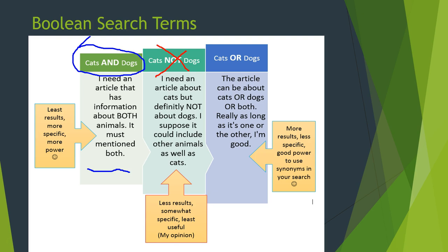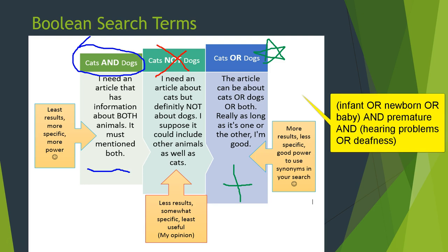The next Boolean term is OR, which means more results. With AND we get more specific but fewer results; with OR we get more results. This is great for including synonyms or giving the database more wiggle room. Cats OR dogs — one or the other, both of them, as long as it's some sort of pet. Or going back to the infant example: infant OR newborn OR baby. So if you type into a database and you're not getting any results or nothing relevant, that's when you'll want to include OR. For example: cats OR feline OR kitten OR kittens. You get the idea.